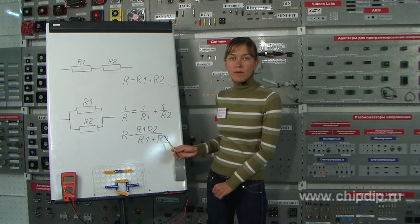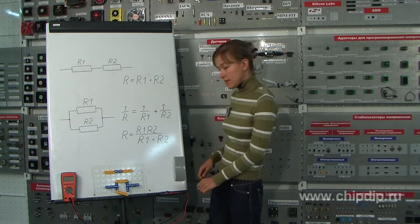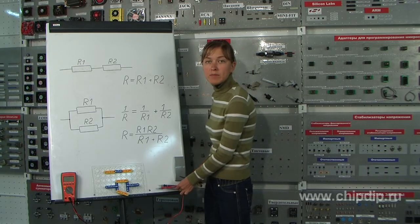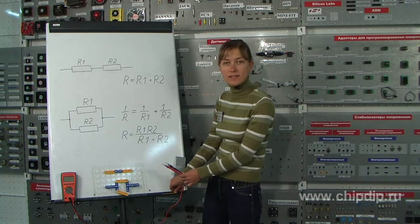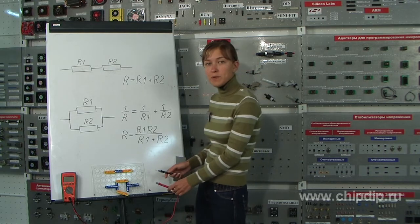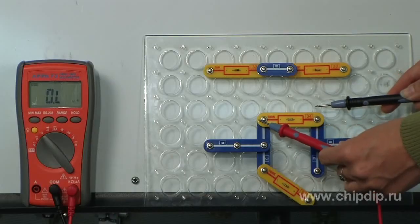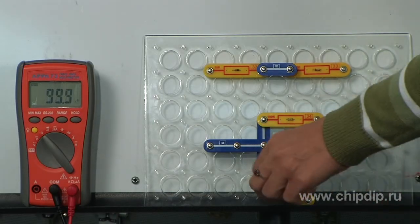When the resistors are connected in parallel, the total resistance is always lower than that of the individual resistors. Say, by connecting two resistors in parallel with the resistance of 100 kOhms each,